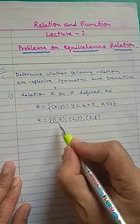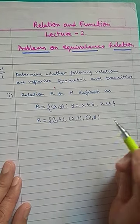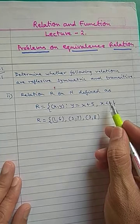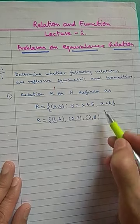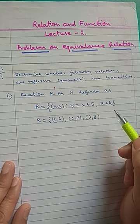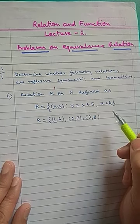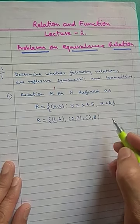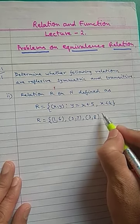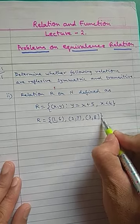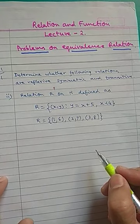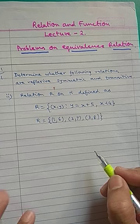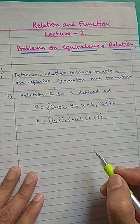We take x as 1, 2, and 3 only — not 4 — because x is less than 4, not less than or equal to 4. So R equals {(1,6), (2,7), (3,8)}.